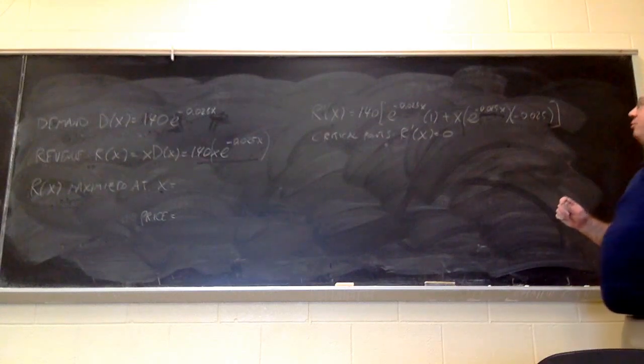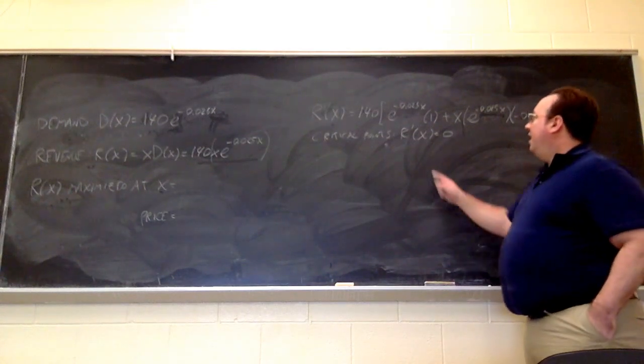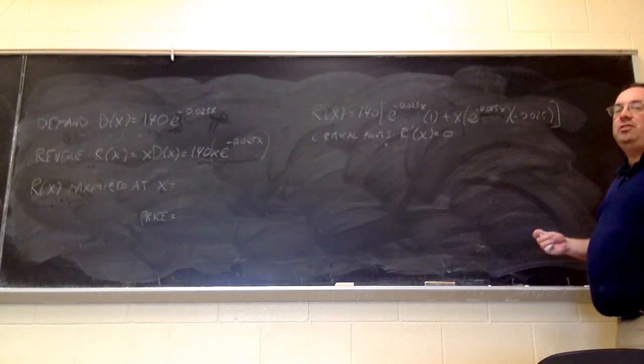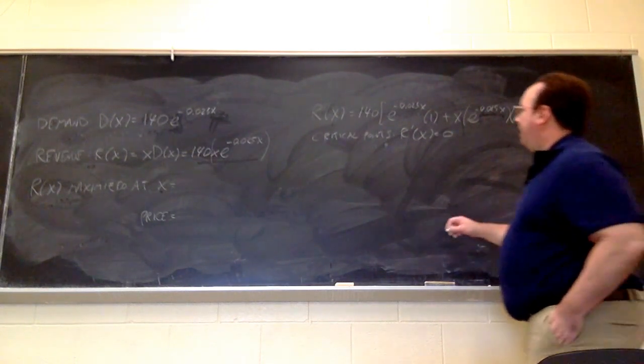To find out where this function is equal to 0, I can simplify matters by noticing what I can factor out. Both terms in here have e to the minus 0.025x, which is never 0, it's always positive. So, I'm just going to factor that out.